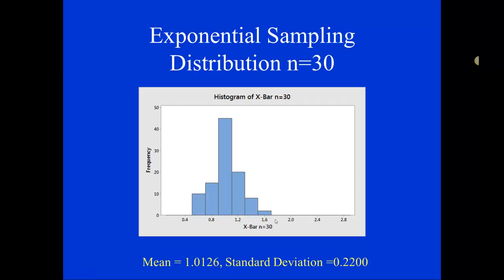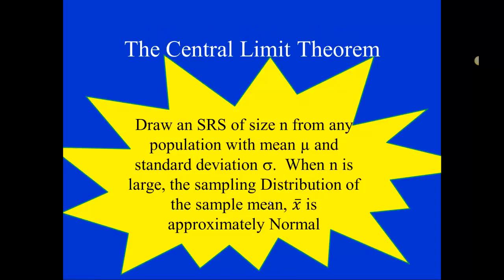So basically, no matter what shape our population is, if our sample size is big enough, the shape of the sampling distribution will be approximately normal. So this result is known as the central limit theorem. Draw a simple random sample of any size n from any population with mean mu and standard deviation sigma. And when n is large, the sampling distribution of the sample mean x bar is approximately normal.